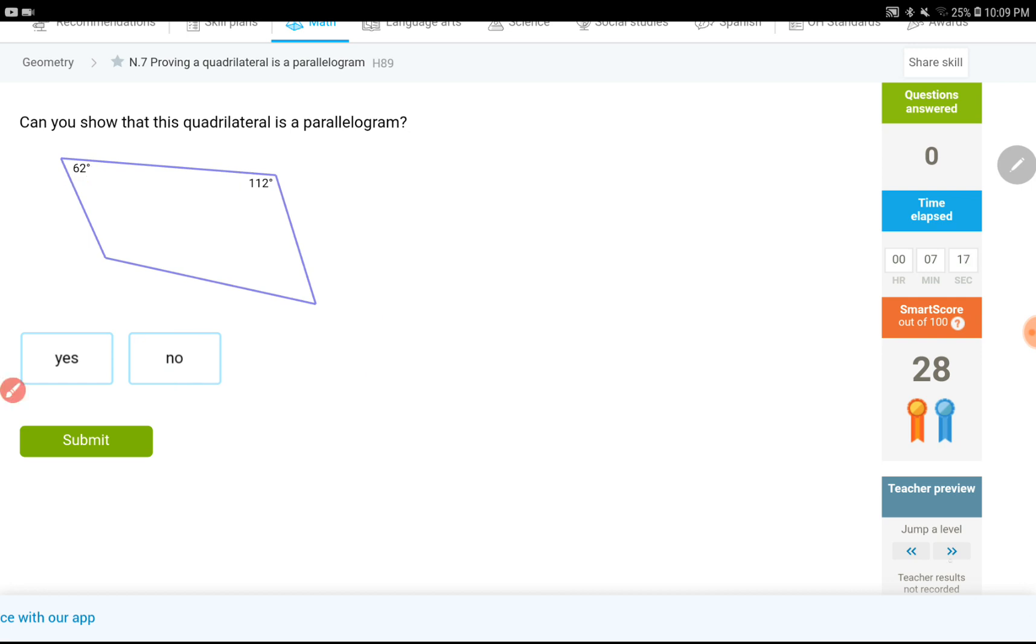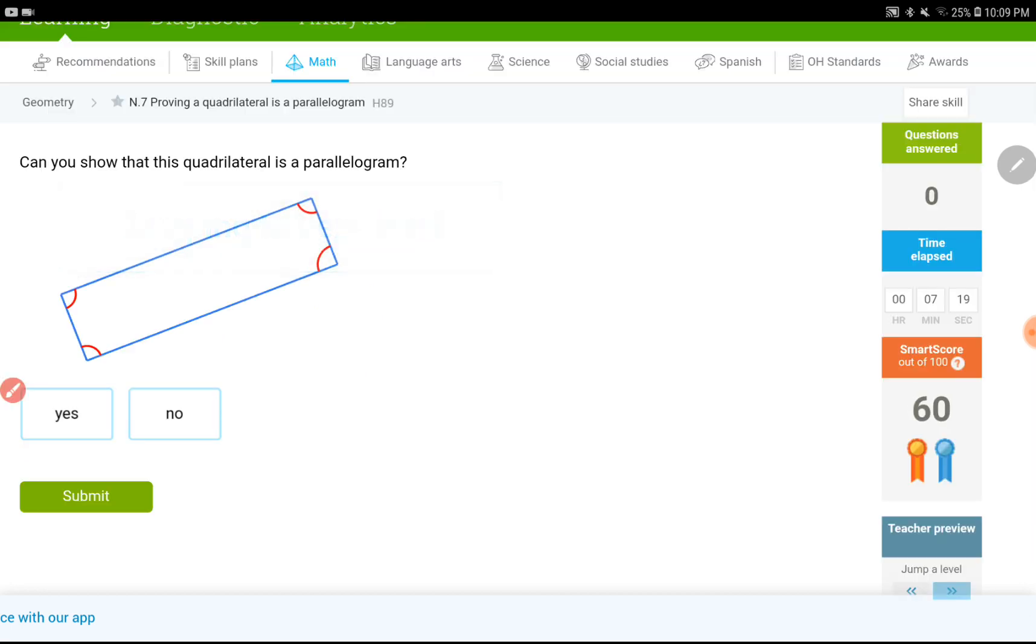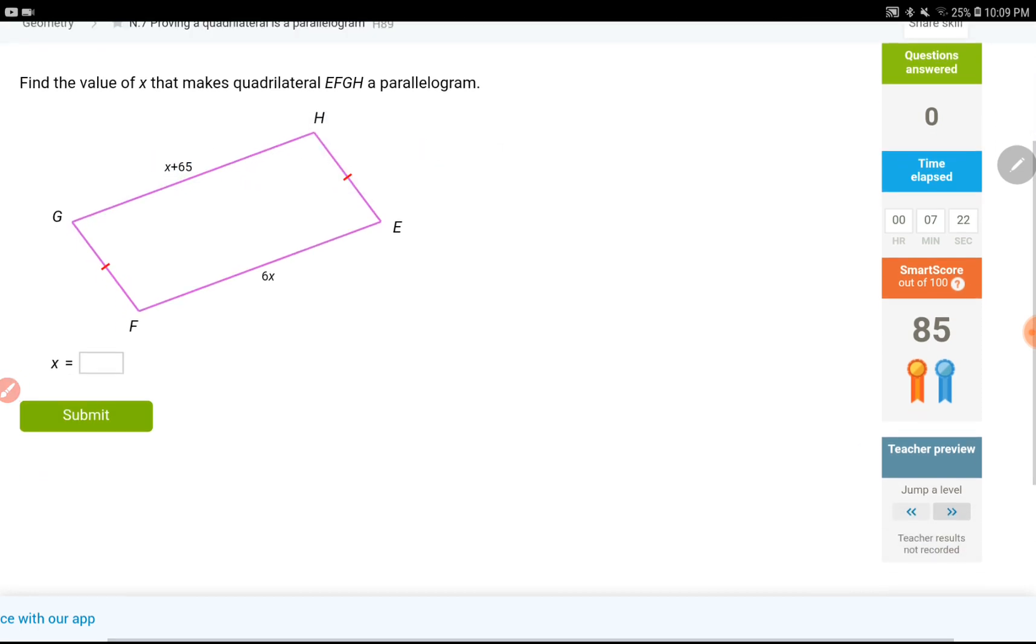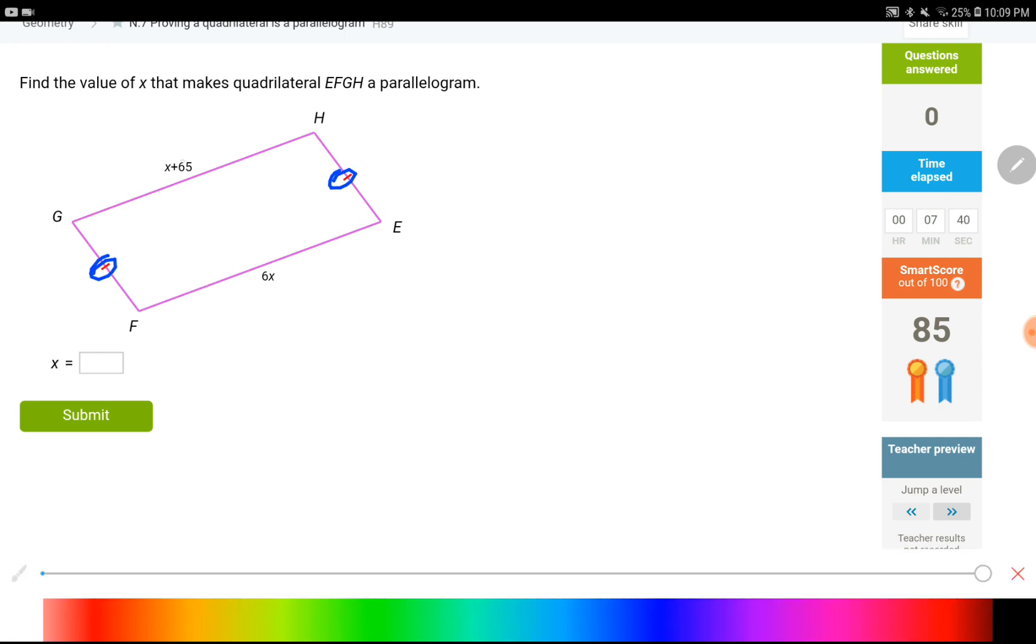So, I want to still do one question from that level 80 something. Find a value of x that makes this quadrilateral a parallelogram. We already know that these two sides are equal. So, there's no point of doing anything with those two. And if this figure is a parallelogram, here's another thing. These two opposite sides must be equal. So, 6x and x plus 65. These two must be equal. So, solve it for x.